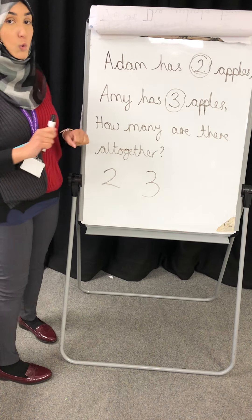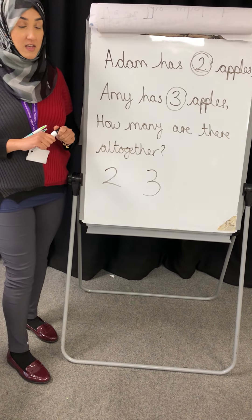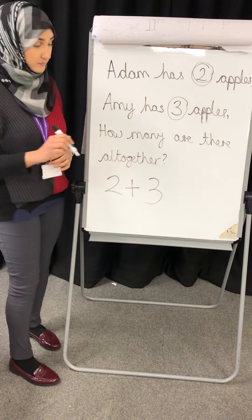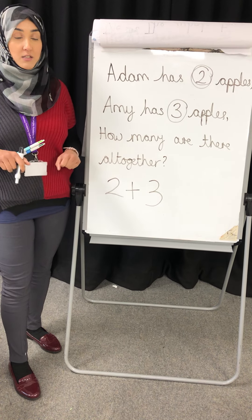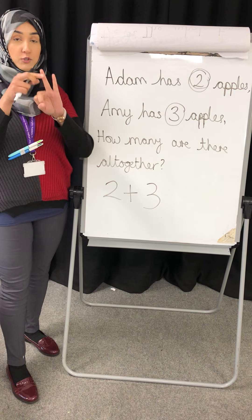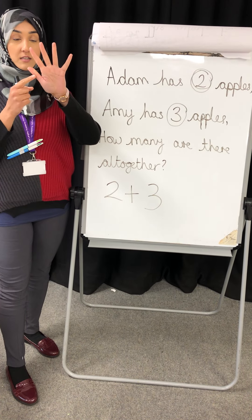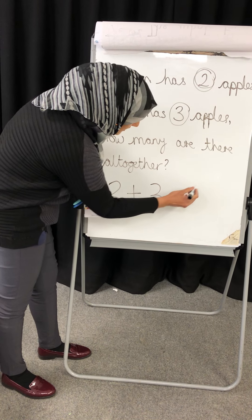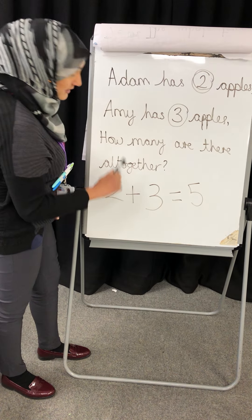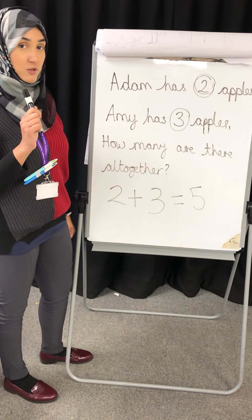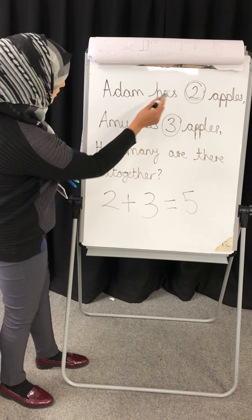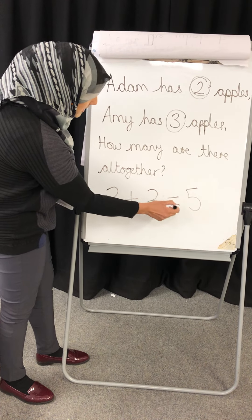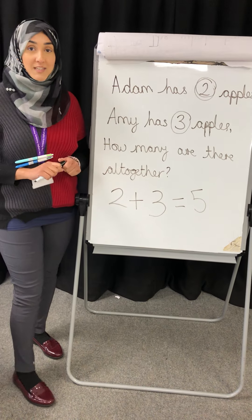And then it says how many are there all together? So when we have an add sign or addition symbol, that means the numbers get bigger. So we're going to put up our two fingers, three fingers — all together we've got five. Put an equal sign, write the number five. Let's just double check because mathematicians like to do things accurately. So we've got two apples over here, three apples over here, equals five apples all together.